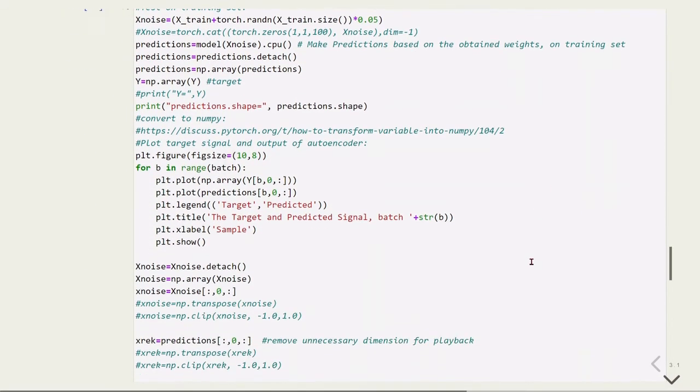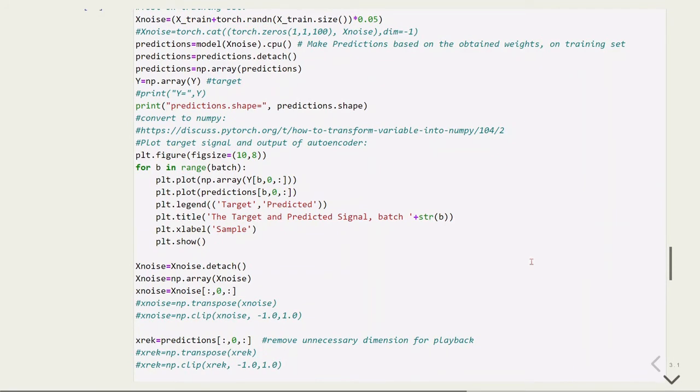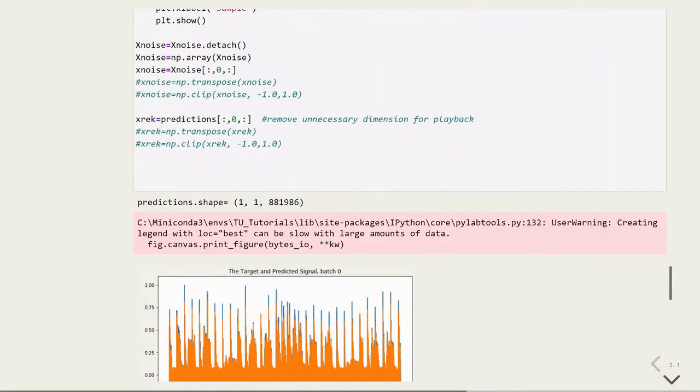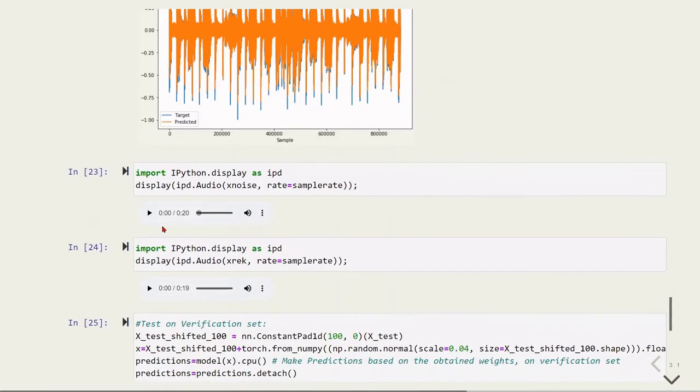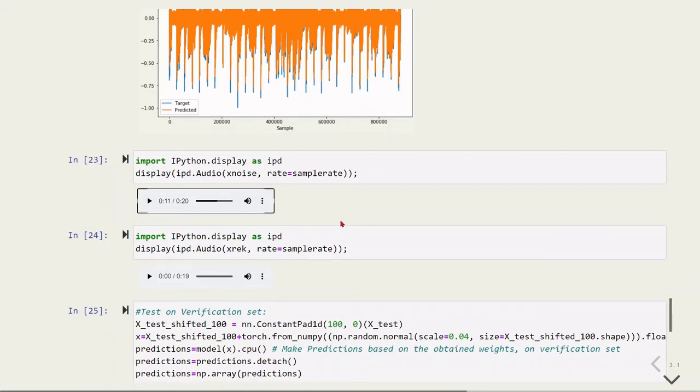We will test our model using the training file. Here we have the target and the predicted signal and we can listen to it. This is the same as before. There is no change on the training file apart that we are adding different noise every epoch. We see the noise there. And now the reconstructed signal, the output of our model.